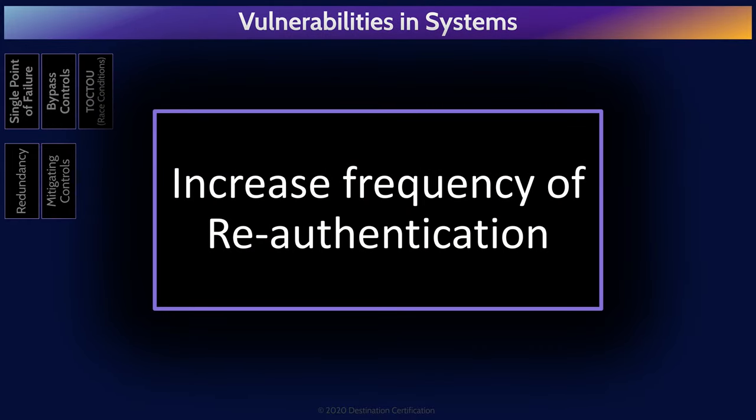There are numerous rather technical ways to reduce TOCTOU vulnerabilities — exception handling, transactions which provide concurrency controls, file locks, etc. But the answer you should look for on the exam is rather simple: increase the frequency of how often a check is performed to ensure access is appropriate, thus reducing the window of time in which an attacker can race in and do something they aren't supposed to.